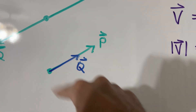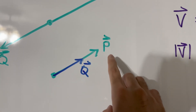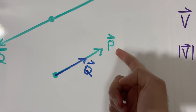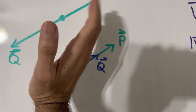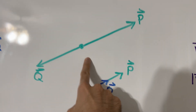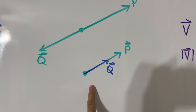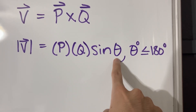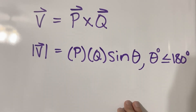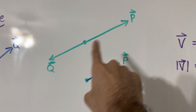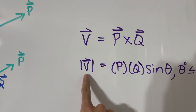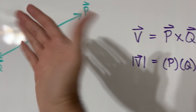The second special case is when P and Q point in the exact same direction — the angle between them is zero. The sine of zero is also zero. So in both cases, whether the vectors are exact opposites or exactly the same direction, the magnitude of the cross product is zero and the right-hand rule does not apply.